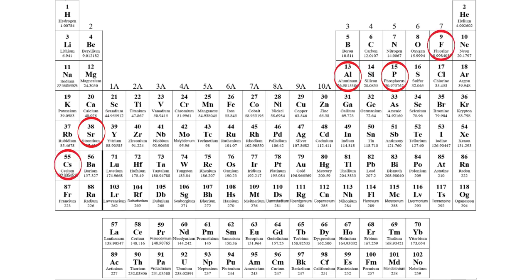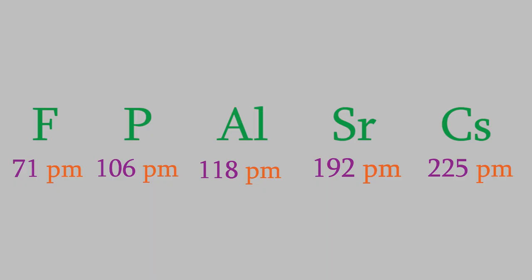Now that we've done that, we just need to remember that the atoms get larger as we go down and to the left. So fluorine is the smallest, and then phosphorus, then aluminum, then strontium, and cesium is the largest. And we find that the actual data confirms it. Of these five, fluorine is the smallest, at 71 picometers, and cesium is the largest, at 225.